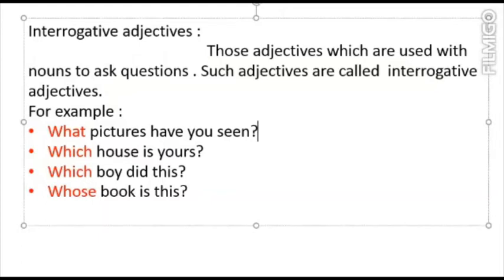'Whose book is this?' Book is the noun here and we are asking whose book, so whose is the interrogative adjective. Interrogative adjectives are used to ask questions.